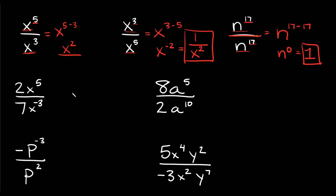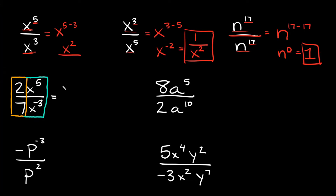Hopefully those weren't too bad. Now let's mix it up a little bit and throw some coefficients in here. So here we have 2x to the 5th over 7x to the minus 3. One thing you can do here is split up the coefficients from the variables. So we can literally have a fraction — 2 over 7 — and then multiply it by this other fraction: x to the 5th over x to the negative 3.